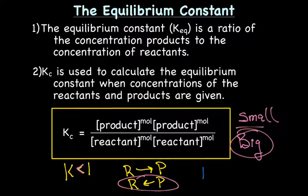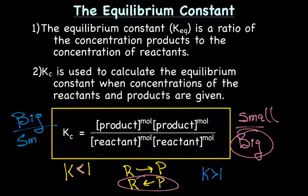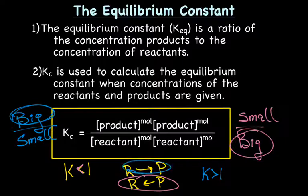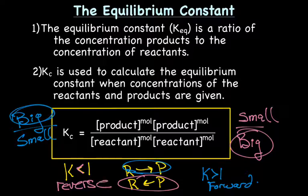Conversely, if we have a K greater than 1, that means the top number is a big number and the bottom number is a small number. Which means at equilibrium, we're going to have more product than reactant, which means the forward reaction is favored. So that's one thing we can do with the equilibrium constant — use it to predict which direction of the reaction is favored.